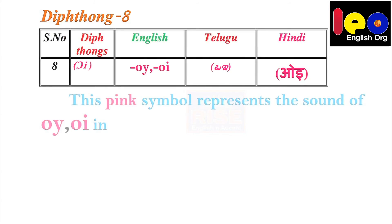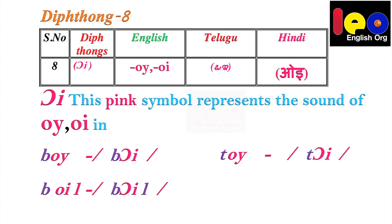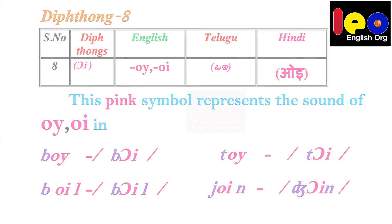Diphthong 8. Below this table you see O and E. Both sound together as 'ɔɪ'. This pink symbol represents the sound of OY in 'boy', OY in 'toy', OI in 'boil', OI in 'join'. So this symbol stands for the sound ɔɪ.